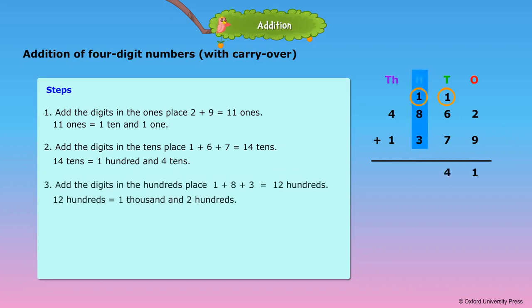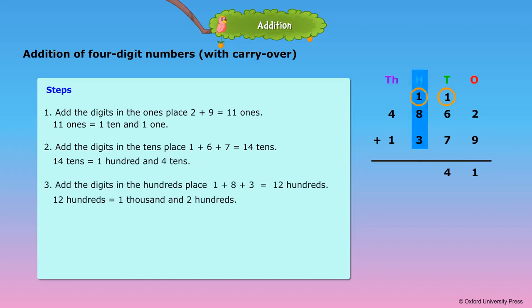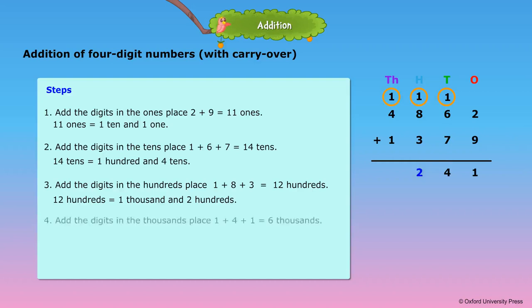Step 3: Add the digits in the hundreds place. 1 plus 8 plus 3 is equal to 12 hundreds. 12 hundreds is equal to 1,000 and 2 hundreds. Put 2 hundreds under 3 in the hundreds column, and carryover 1,000 over 4 in the thousands column.